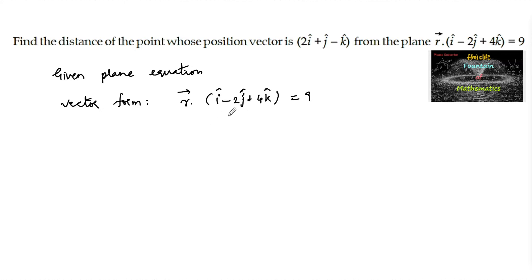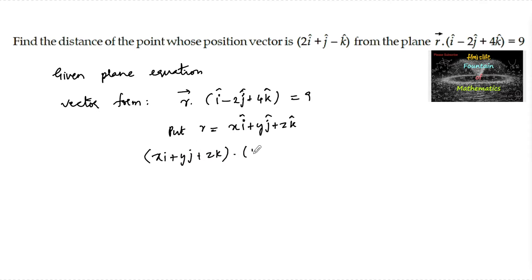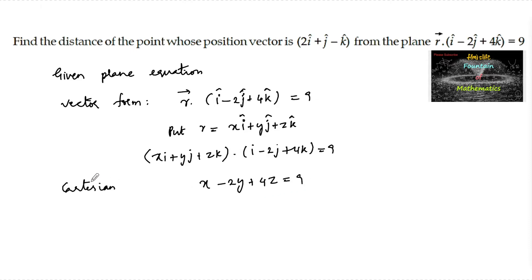Let us convert this into Cartesian form. Put r equal to xi plus yj plus zk, so we can write x minus 2y plus 4z equals 9, which is the Cartesian form. Or we can also write x minus 2y plus 4z minus 9 equals 0.